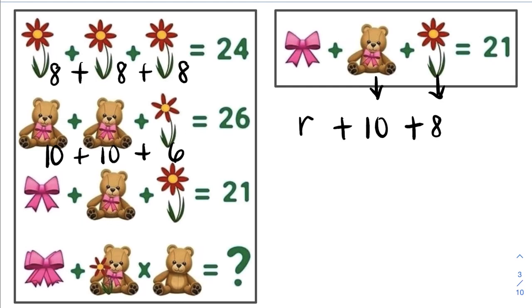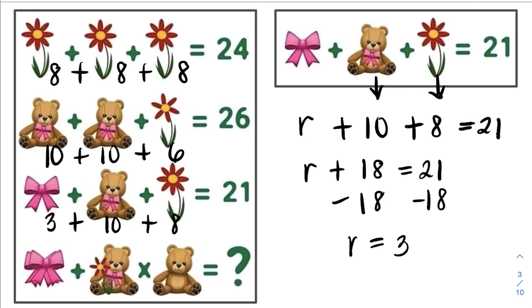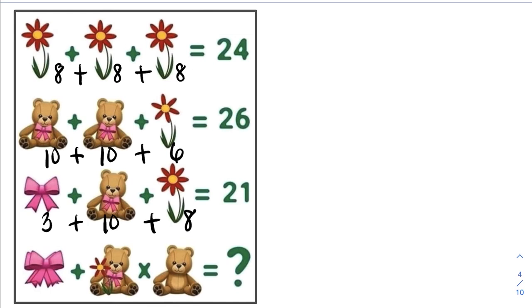So we have r plus 10 plus 8 is equal to 21. Simplifying the left side, we have r plus 18 is equal to 21. Subtracting 18 from both sides, r is equal to 3. So the value of each ribbon is equal to 3. So 3 plus 10 plus 8 is equal to 21. Now let's zoom in to find the value of line 4.